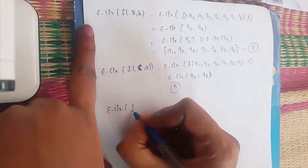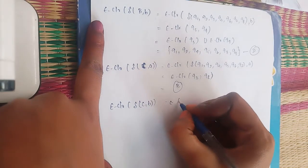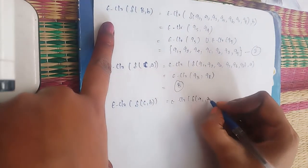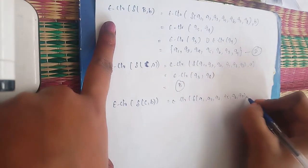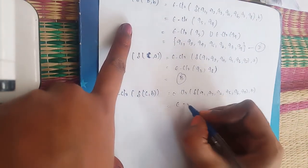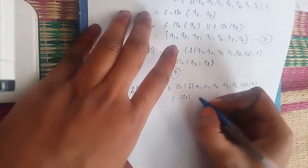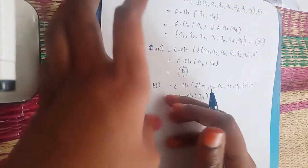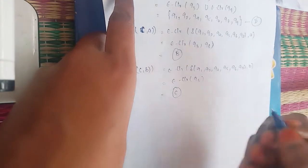E-closure of δ(C, b) — δ({Q1, Q2, Q4, Q5, Q6, Q7}, b). On b, Q4 goes to Q5. So E-closure of Q5, which is already found as state C. So δ(C, b) = C.